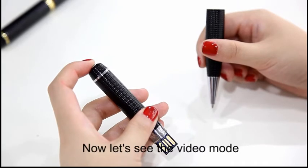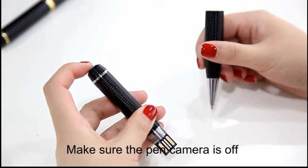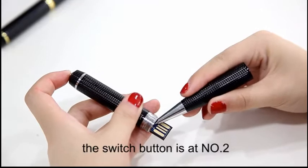Now let's see the video mode. First, make sure the pen is off, the switch button is at number two.